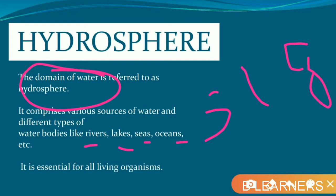Water is present in solid form as glaciers, which are spread over the Arctic and Antarctic regions. In liquid form, water is found in seas and oceans. In the atmosphere, water is present as vapor — the gaseous form of water is moisture. Water is very important for each and every organism, whether it is a human being, plant, or animal — it is equally important for everyone.